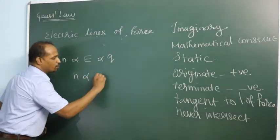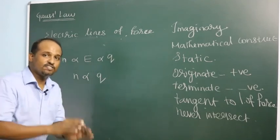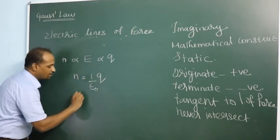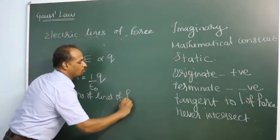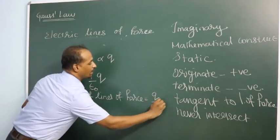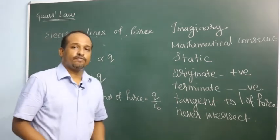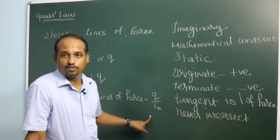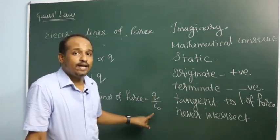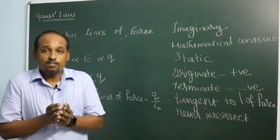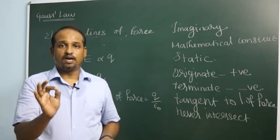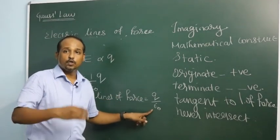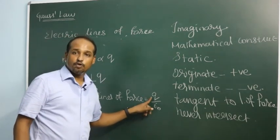The number of lines of force is directly proportional to Q. In the SI system, the proportionality constant is 1/ε₀, so the number of lines of force equals Q/ε₀. If there is one coulomb of charge, you can draw 1/ε₀ lines of force; for two coulombs, 2/ε₀; for Q coulombs, Q/ε₀ lines of force originate from the positive charge in vacuum.